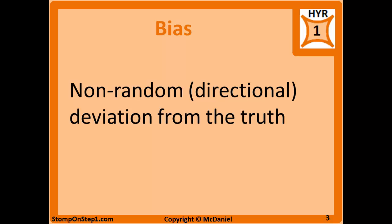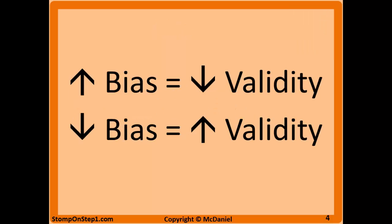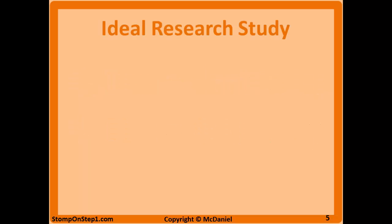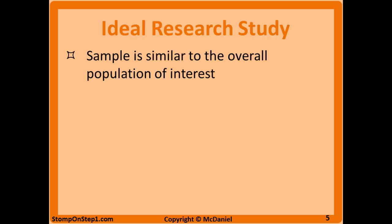A study with a lot of bias cannot be corrected with a larger sample size, because it doesn't matter how many more patients you add — you're always going to get an average that's consistently skewed one way or the other. High bias means low validity, and the opposite is also true. Now that we know what validity and bias are, it's important to outline what an ideal research study would look like. In most cases setting up an ideal research study is just not possible, but it's good to understand fundamentally what one would look like.